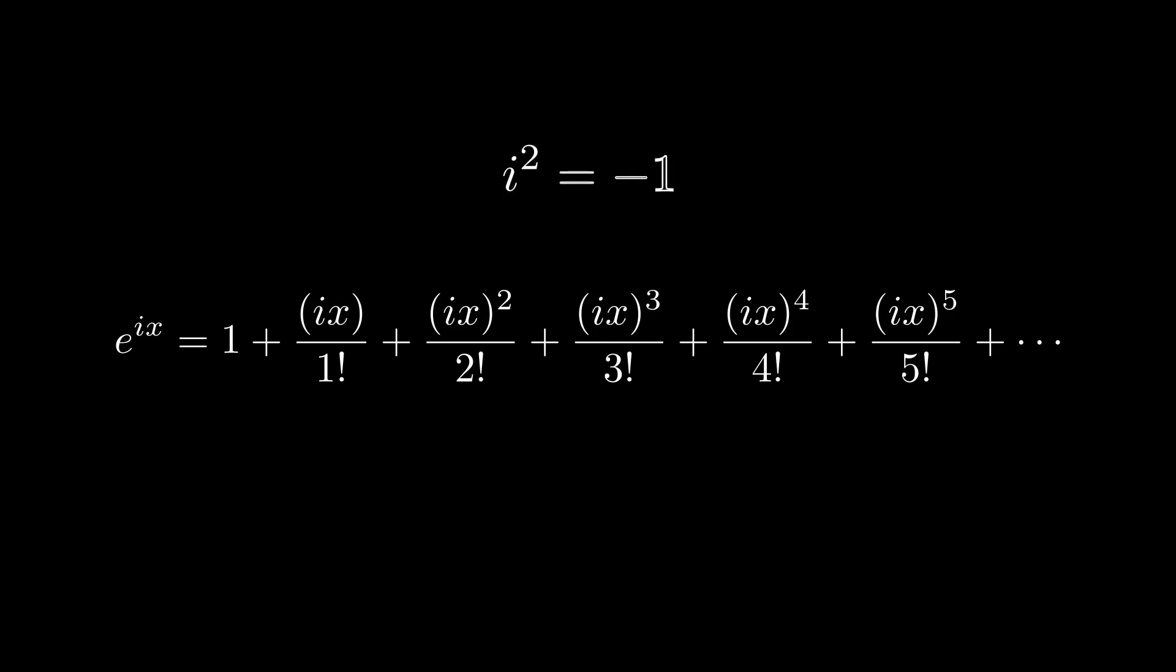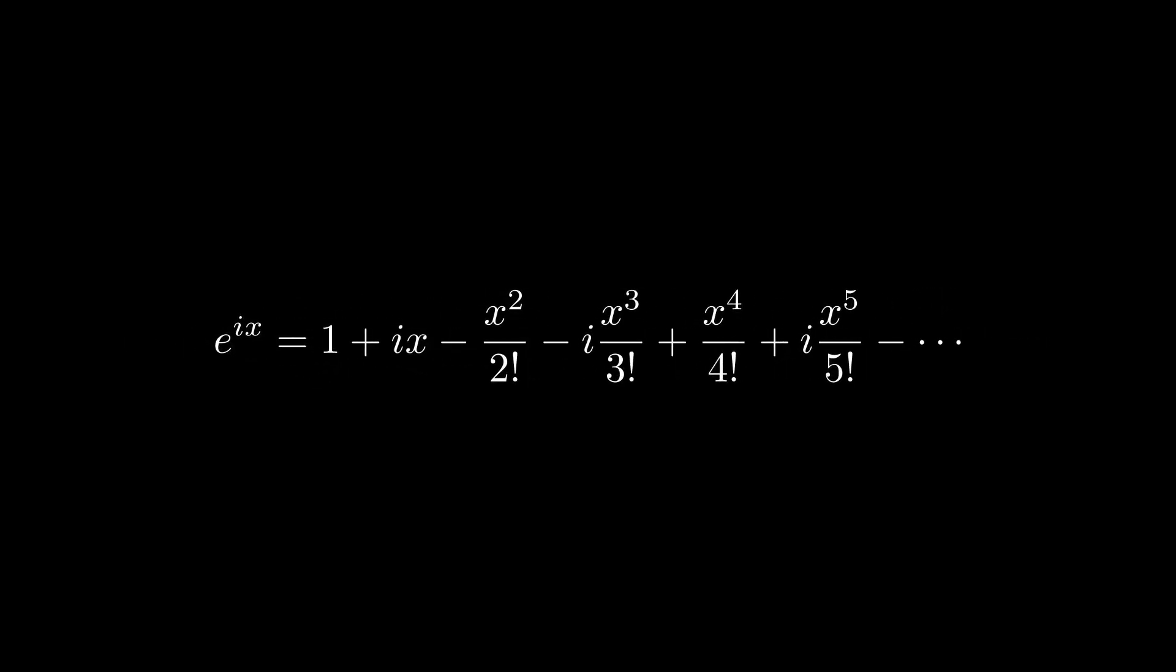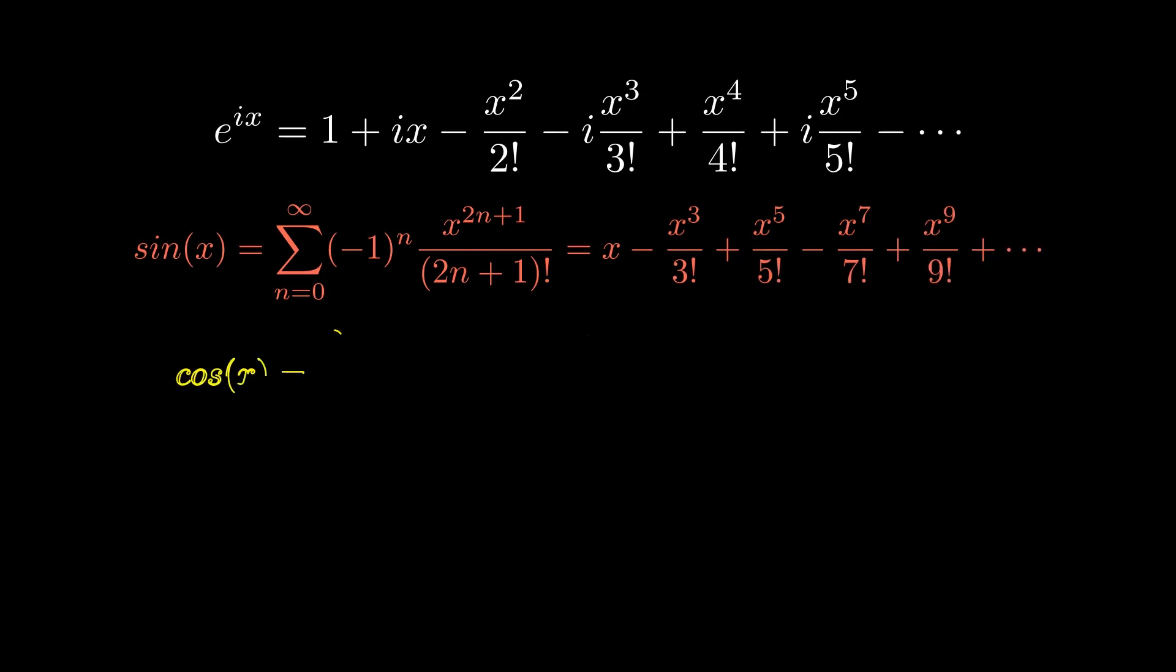Let's also keep in mind that i squared is equal to negative 1. If we multiply everything through, we can make some simplifications to our original power series expansion. If you don't recognize the polynomials of this new series, it may help to take a look at our Maclaurin series for sine of x and cosine of x.